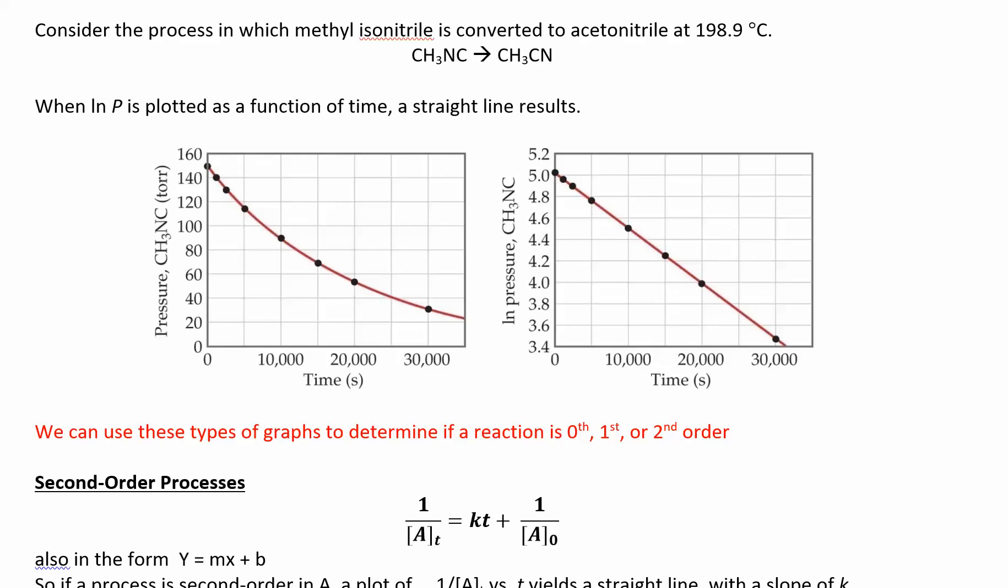So in a first-order process, if you were to plot concentration versus time or pressure versus time, you don't get a straight line. In order to get a straight line, you need to plot the natural log.